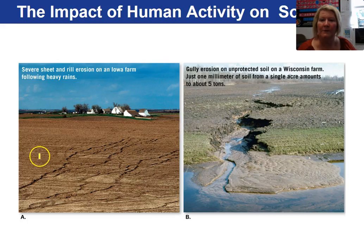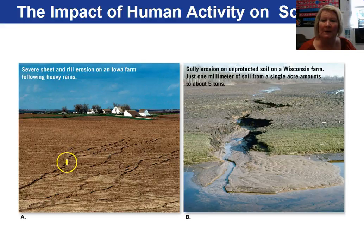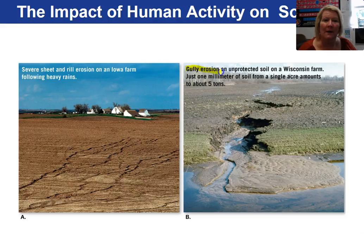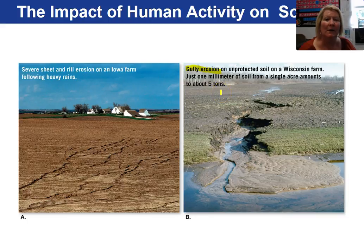In this first picture, we have sheet erosion creating rills in an Iowa farm after heavy rains. This larger rill is a gully, and this is on a Wisconsin farm. Just one millimeter of soil from a single acre can amount to five tons of soil removed.